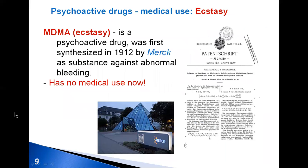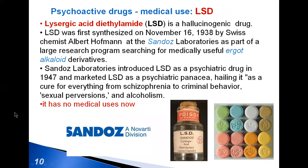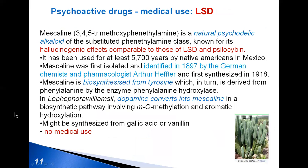The psychoactive drug ecstasy was first synthesized as a substance against abnormal bleeding. Lysergic acid diethylamide, or LSD, is a hallucinogenic drug and for a long time had been used in psychiatry. Mescaline is a naturally occurring psychedelic phenethylalkaloid known for its hallucinogenic effects comparable to those of LSD. Mescaline is biosynthesized from tyrosine.